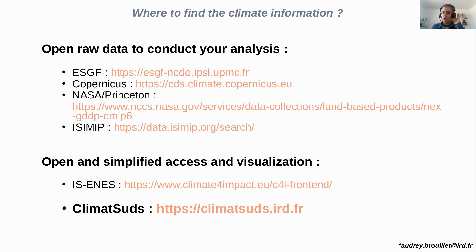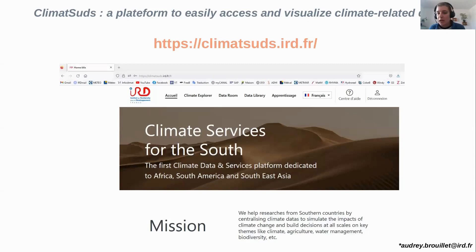If you go on ClimateSUD, you can quickly visualize, for example, projections of crop yields for a specific grid point, a specific country, or a specific area in South America, Africa, or Southern Asia. You can select the language — French or English, maybe Spanish — to navigate the website.